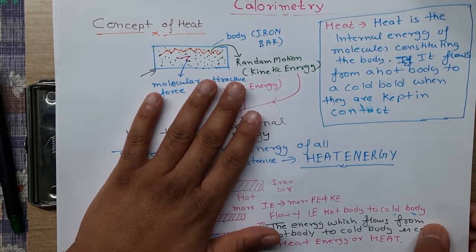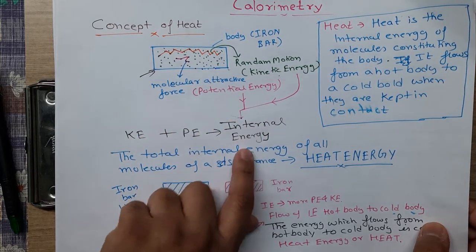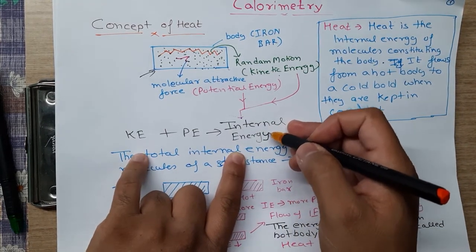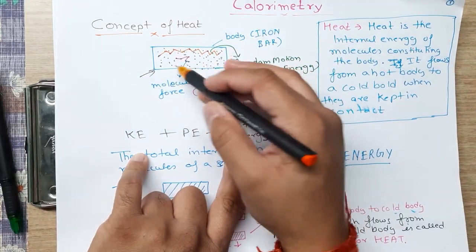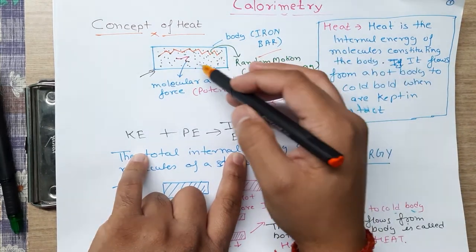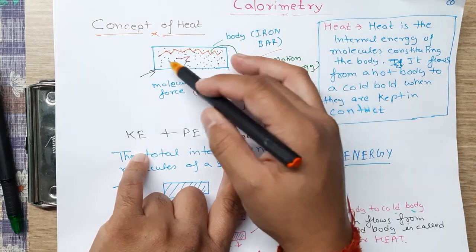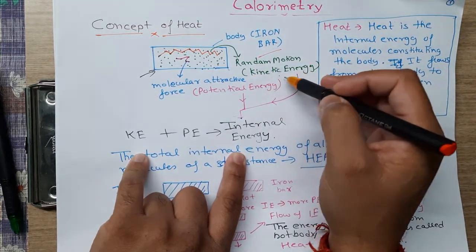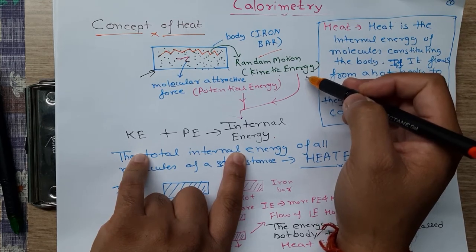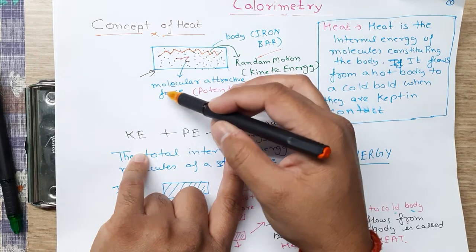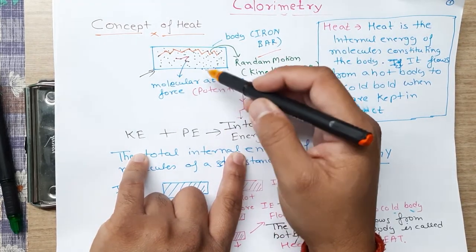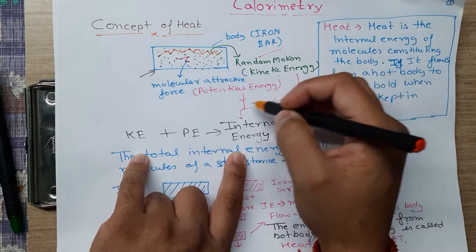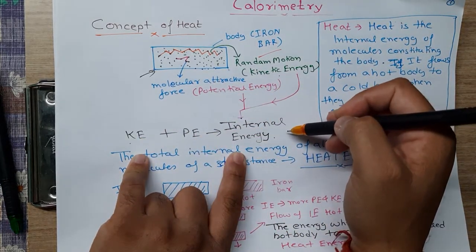The very first difference is heat is a form of internal energy. Heat is a form of internal energy obtained due to random motion. Let's say this is a body — an iron bar — that contains so many molecules, and these molecules are having some kind of motion. First motion is random motion, for which there will be kinetic energy. Another motion is due to molecular attractive force, and because of that a kind of potential energy is generated. If we combine those two — kinetic and potential energy — it will become internal energy.